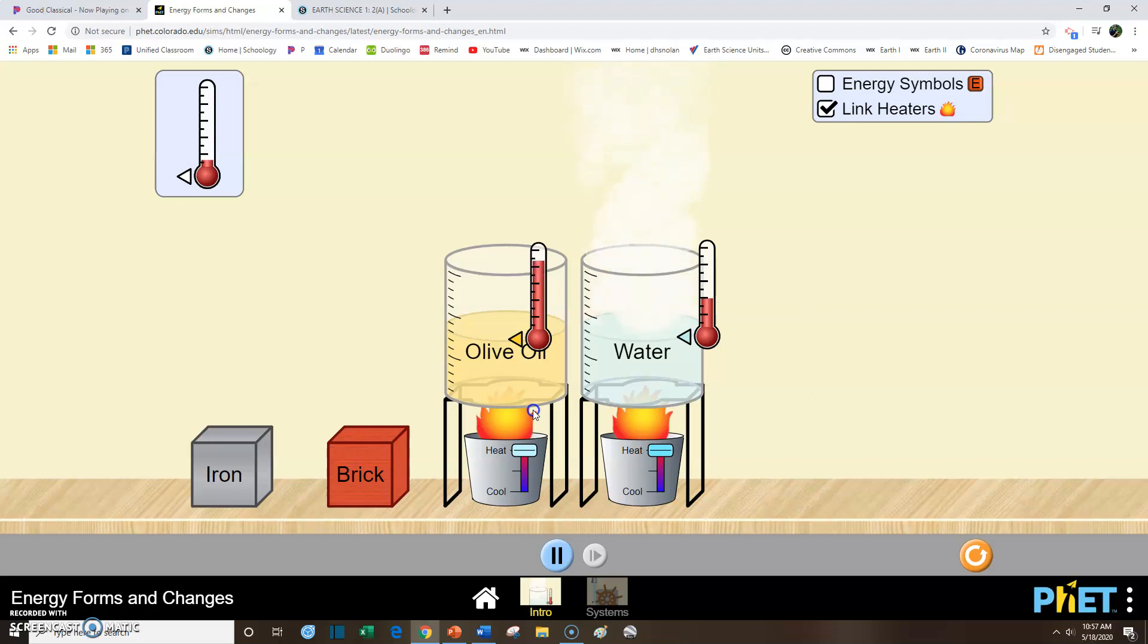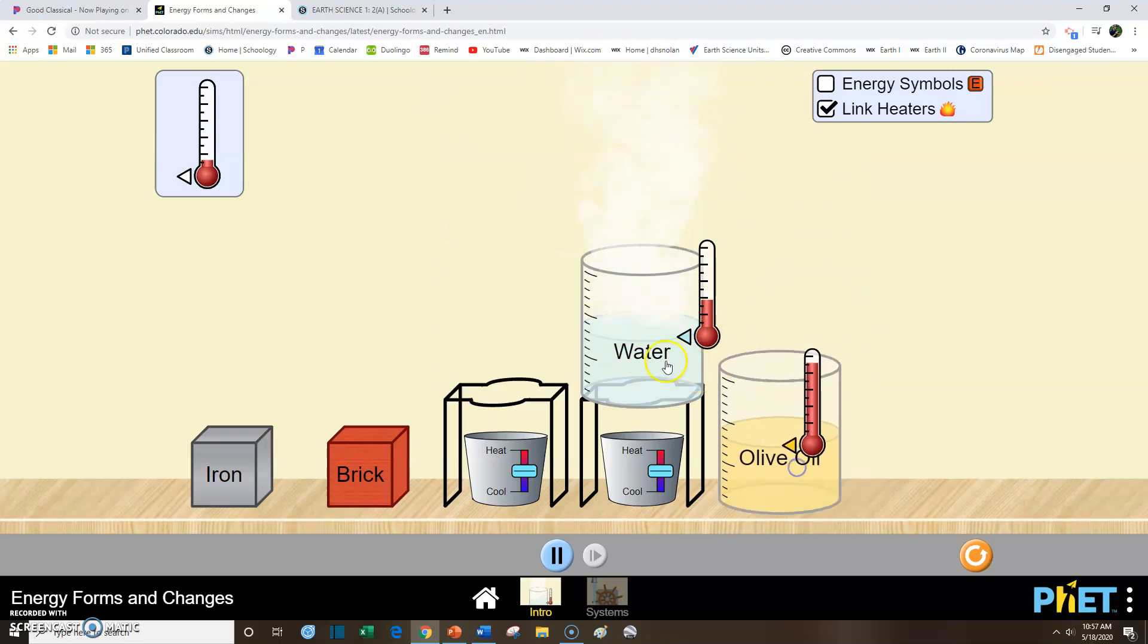you'll notice that something's coming out of it, and its temperature is not changing anymore. So it's relatively low temperature that it quits changing. Over here with the olive oil, it's gone all the way to the top before it seems to have quit changing temperature. So the water is about maybe four tick marks, and the olive oil is all 10. So we're going to go ahead and set these back over here. That water is still kind of steaming. Let's take a look at the iron and the brick. Go ahead and put thermometers on those.